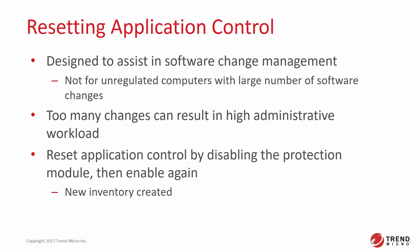One way to reset Application Control is to disable the Application Control Protection Module. Once the agent has acknowledged this and cleared the error status, you can re-enable Application Control and a new inventory will be created.